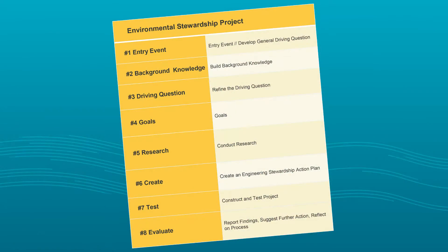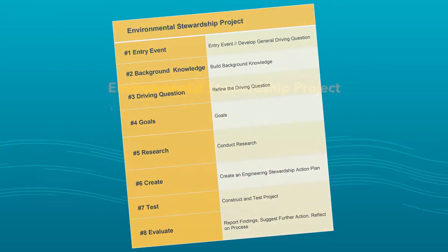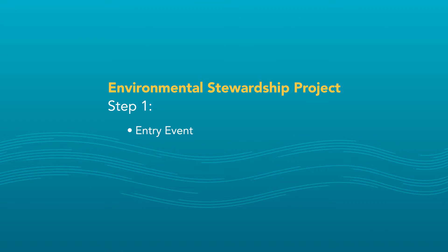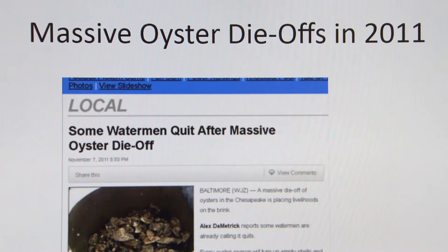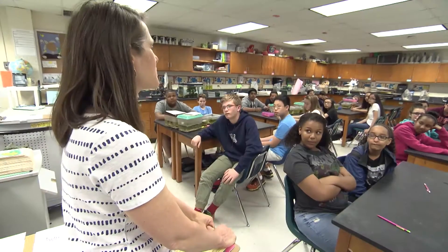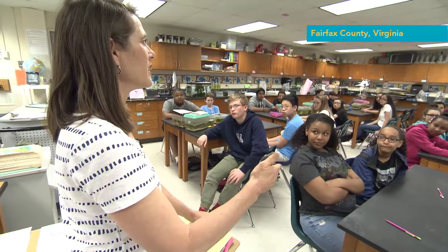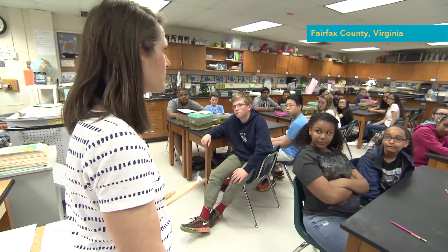We followed eight steps to create our project. First, we learned about an entry event: an oyster die-off that happened in the Chesapeake Bay. An oyster die-off is exactly what it sounds like — a lot of oysters died.